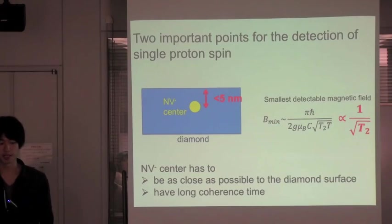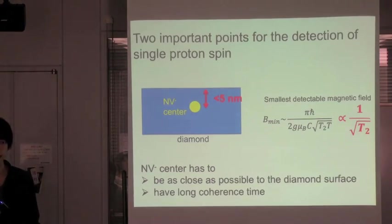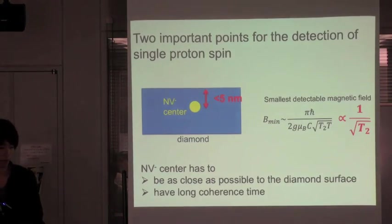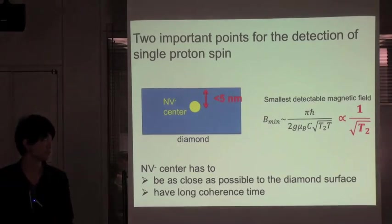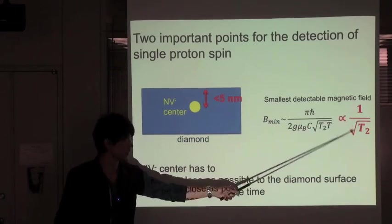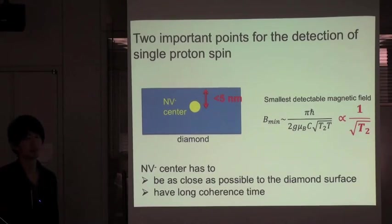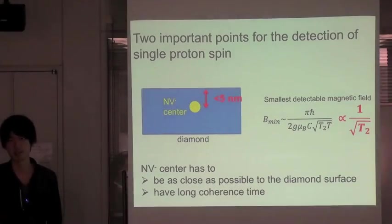Second, NV minus center has to have a long coherence time, because the smallest detectable magnetic field is inversely proportional to root T2. The longer T2, the better sensitivity.